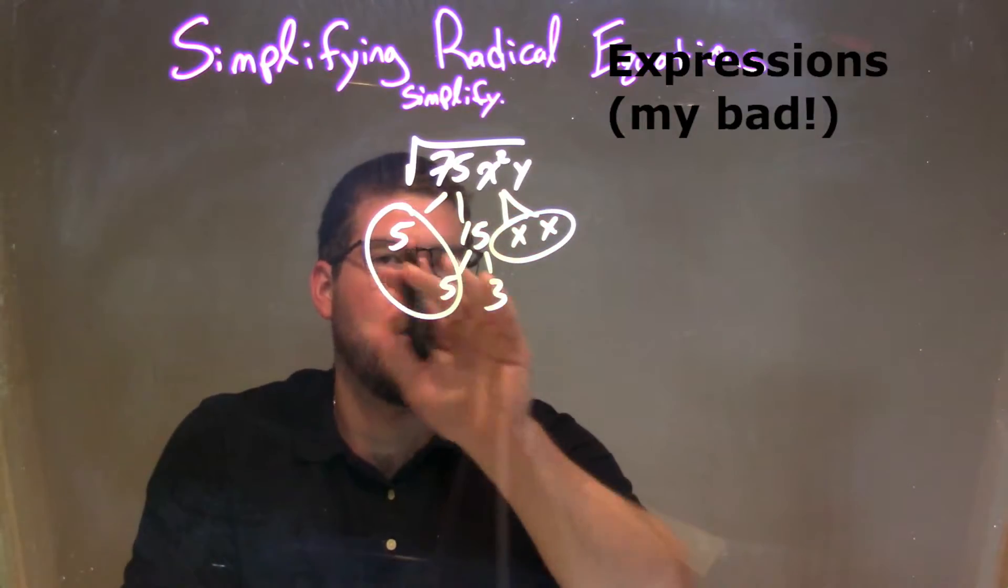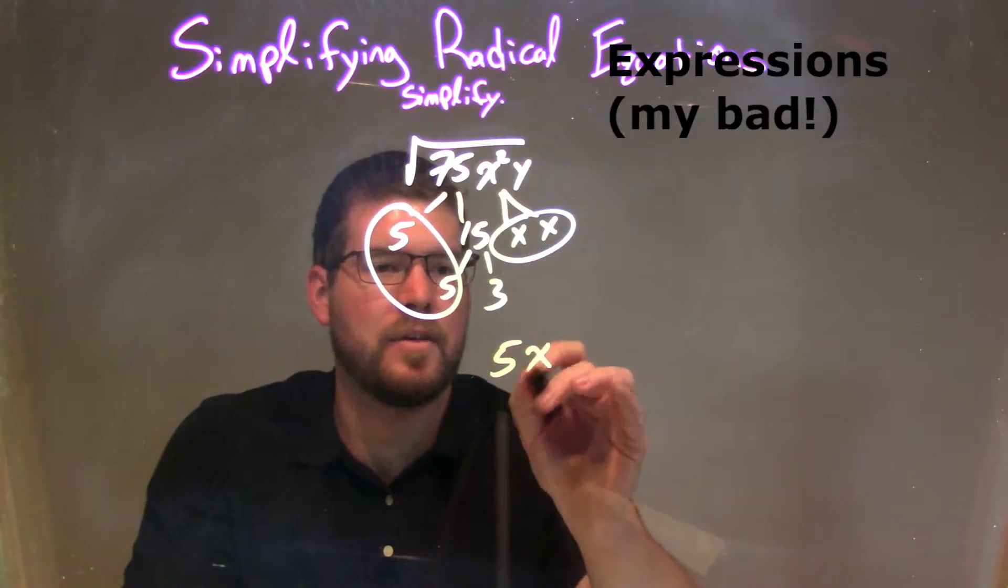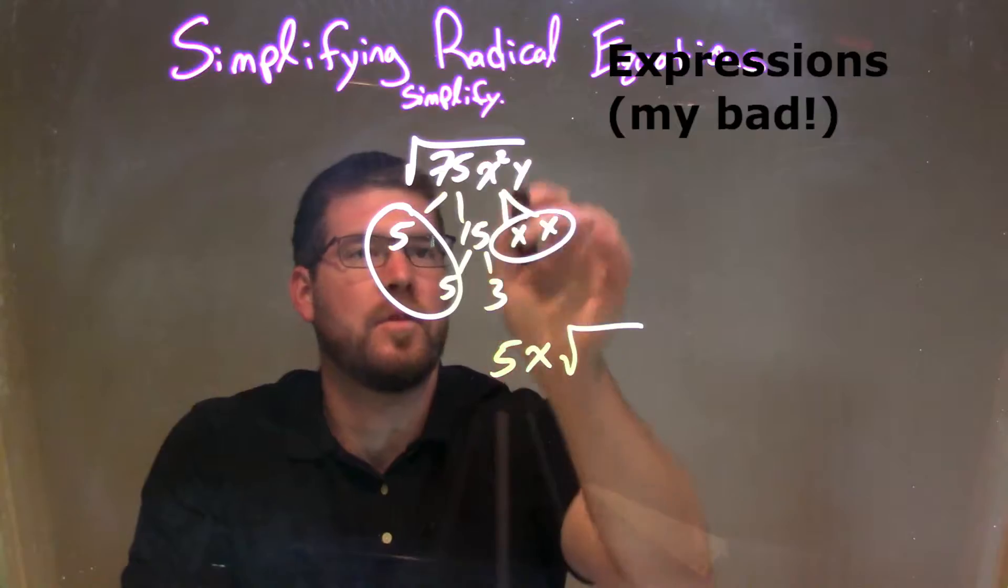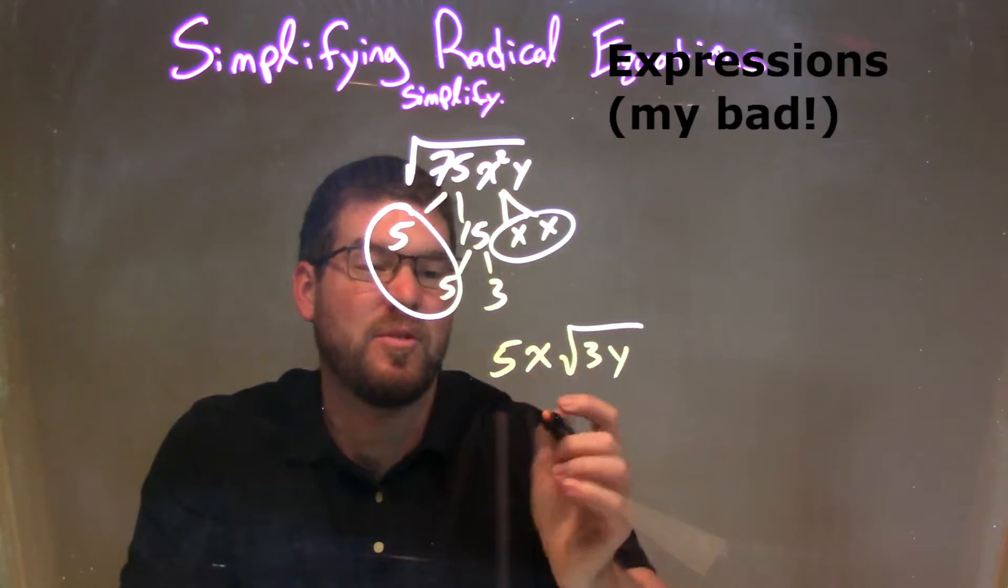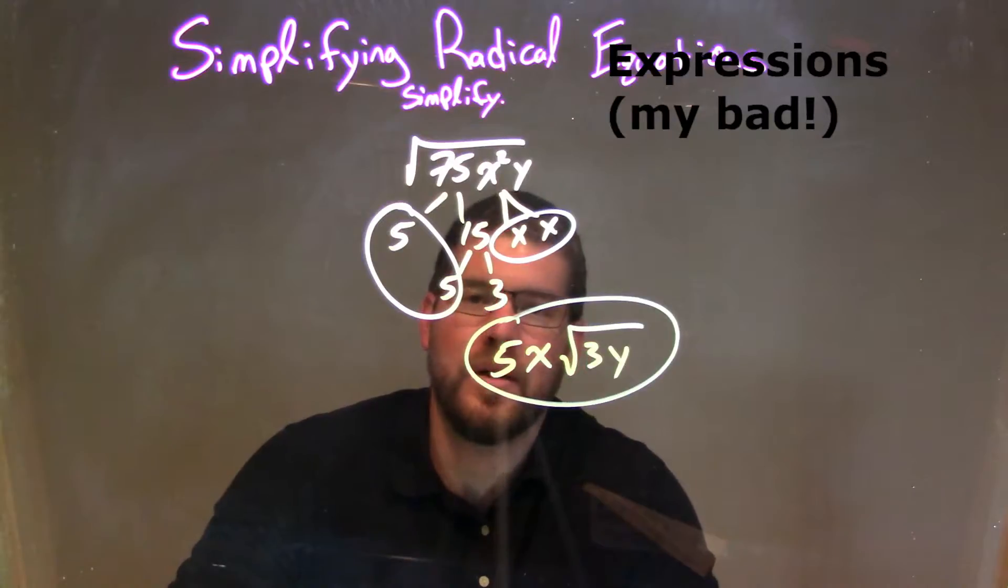So every single pair, I'm going to put the properties on that as a single on the outside, so one 5 on the outside, and one x on the outside. Inside the square root now is just the singles that had no pairs, the 3 and the y, 3y. This one's fairly simple. Our final answer here is just 5x times the square root of 3y.